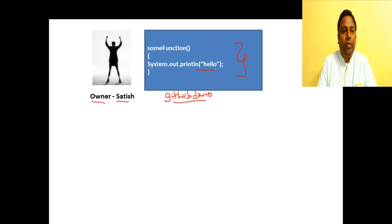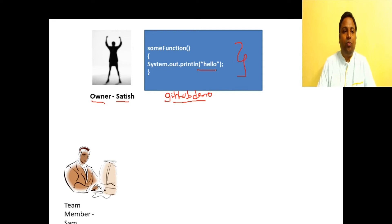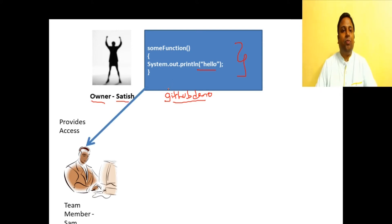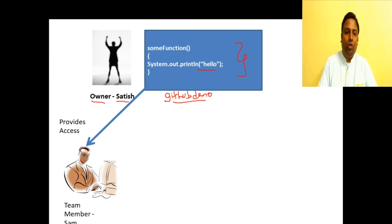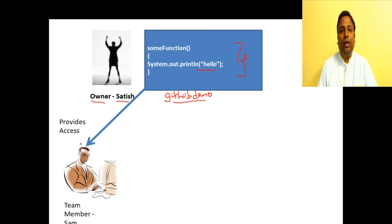There is one collaborator, or team member, named Sam. Since Sam is a collaborator, Satish gives him access to the repository so he can work on the code and propose code changes. When you add someone as a collaborator they can view and propose changes to the repository.